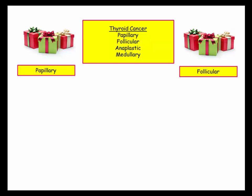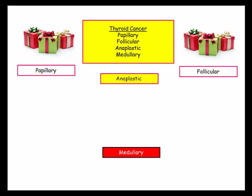Set up a slide, a table, or a piece of scrap paper. You can scribble this on your hand on test day, but make sure you get these. Write down papillary and follicular, then anaplastic, then medullary. There are your four tumors.